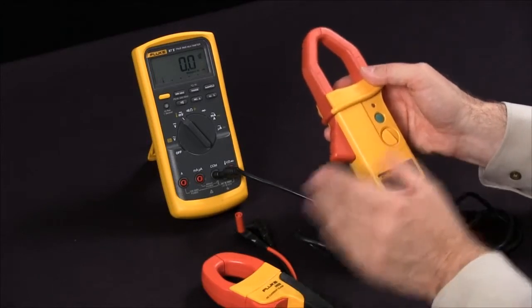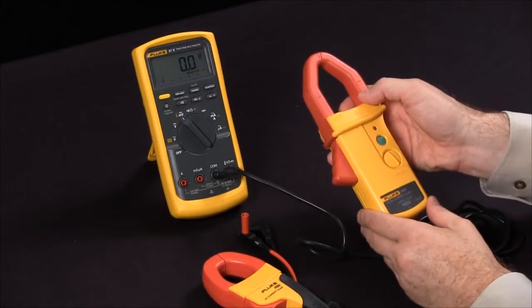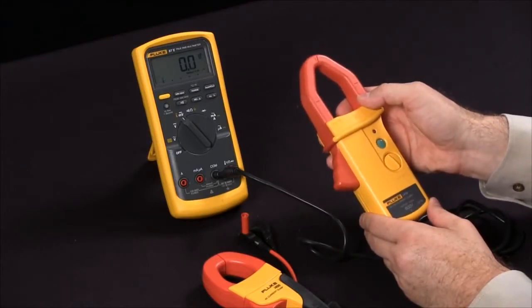At Fluke, we have the AC and DC current clamps, just one of the many ways you can extend the capabilities of your digital multimeter.